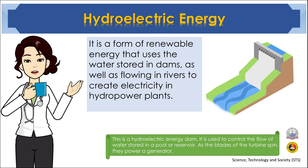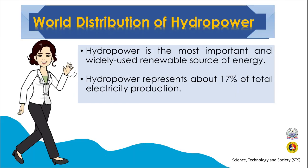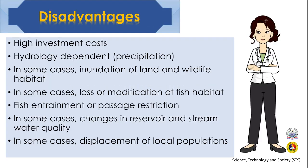The next alternative energy is hydroelectric energy. It is a form of renewable energy that uses water stored in dams as well as water flowing in rivers to create electricity in hydropower plants. Hydropower is the most important and widely used renewable source of energy, representing about 17% of total electricity production. The disadvantages include high investment costs, hydrology dependence, inundation of land and wildlife habitat, loss or modification of fish habitat, fish entrainment or passage restriction, changes in reservoir and stream water quality, and displacement of local populations.